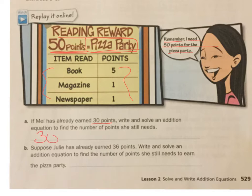So she's earned 30 points, plus we don't know how many more, we'll call that X. And that's going to be, we know she needs 50 points for a pizza party. So 30 plus X equals 50. So I have my equation. It's an addition equation. I want to solve for X to see what she needs.